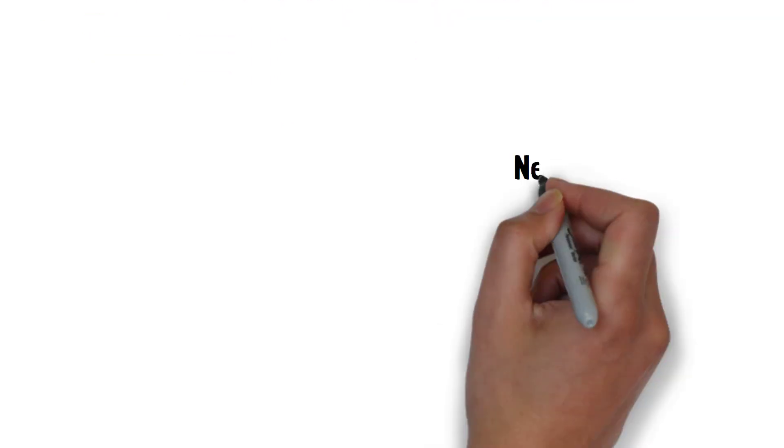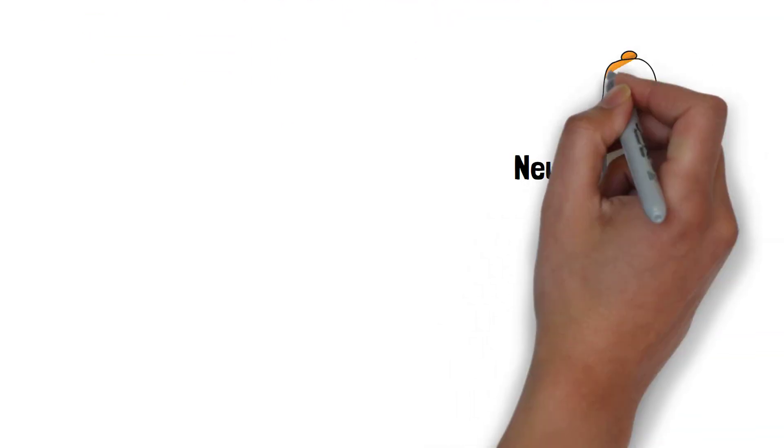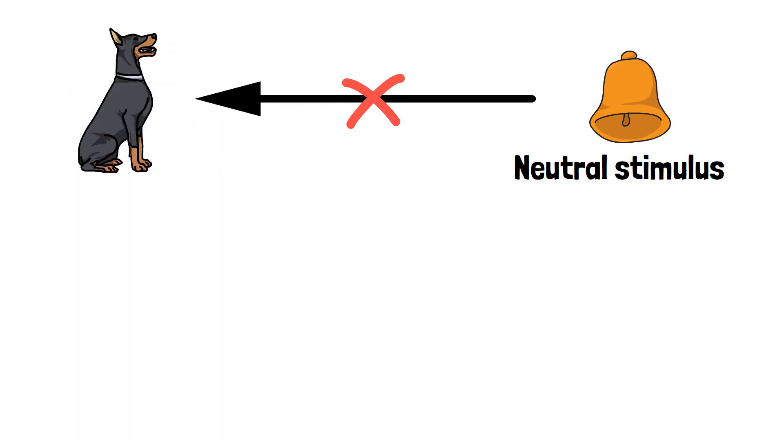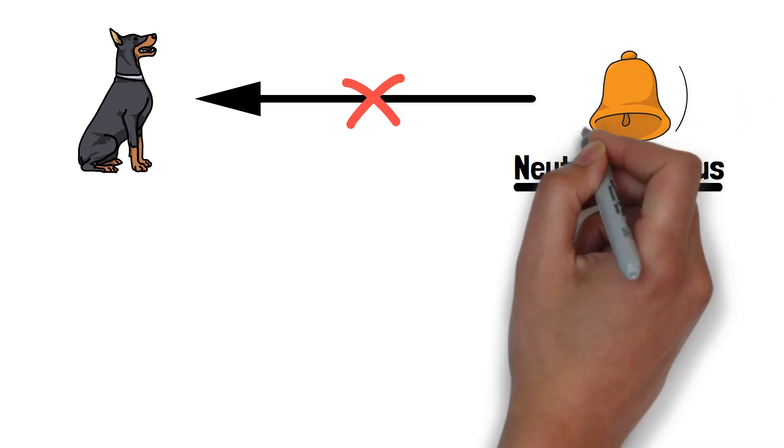Pavlov introduced a neutral stimulus, a bell, which initially did not cause any salivation in the dogs. The bell was neutral because it had no meaning to the dogs, it was just a sound.